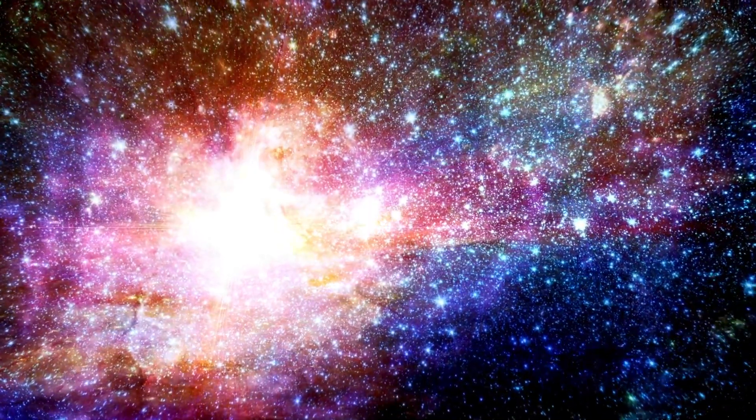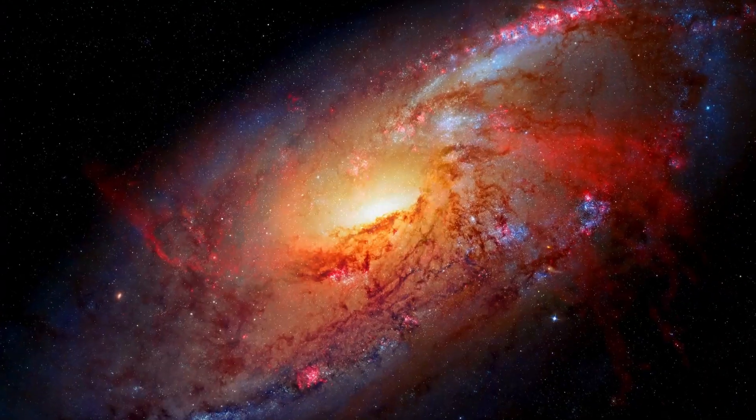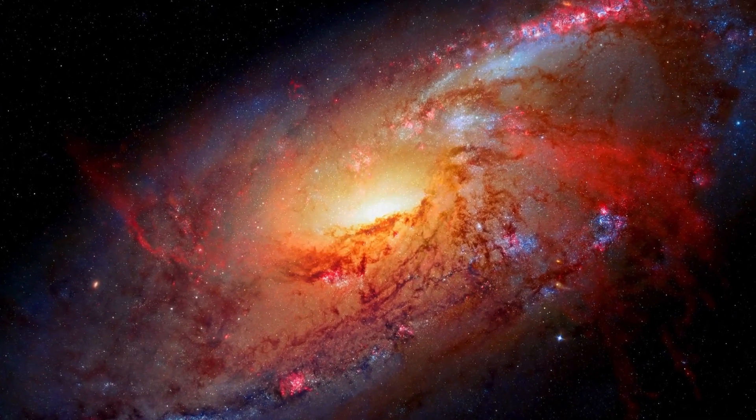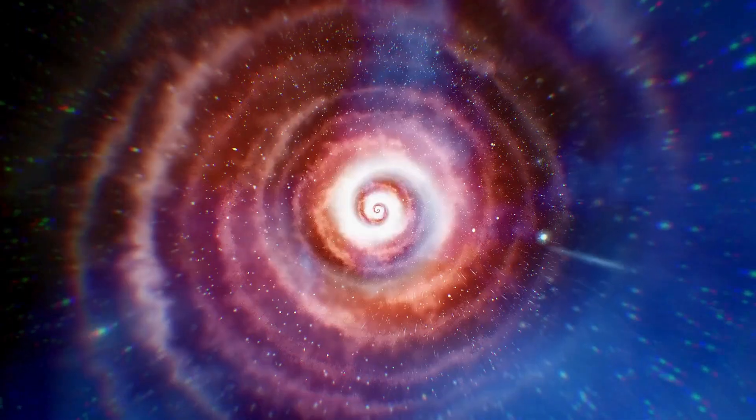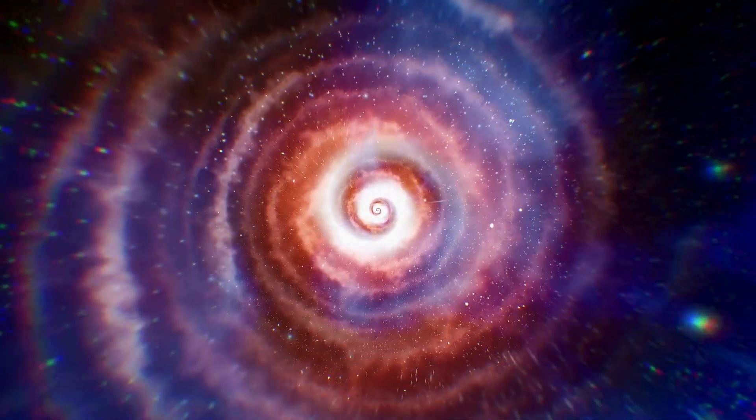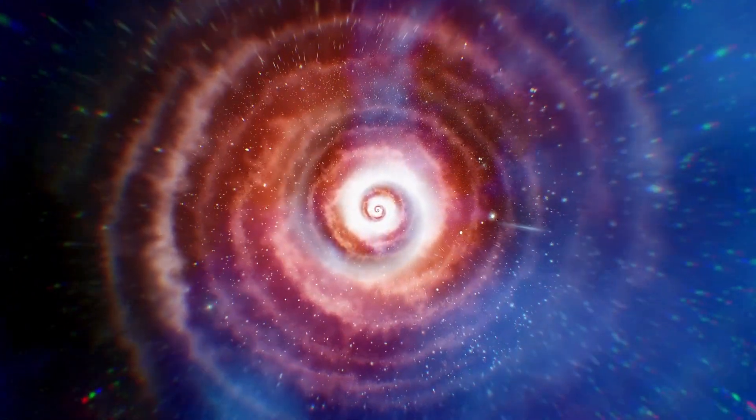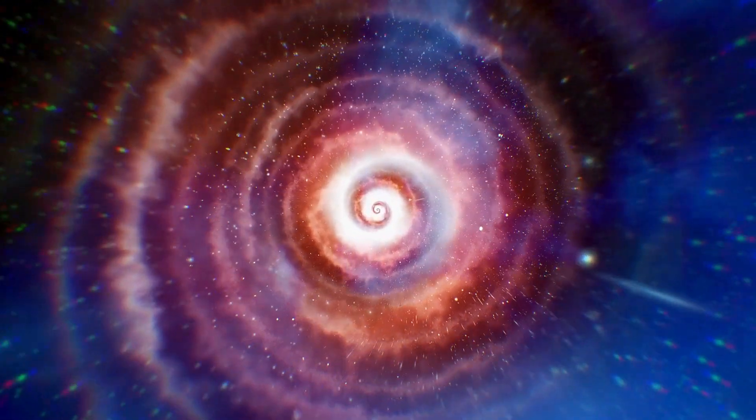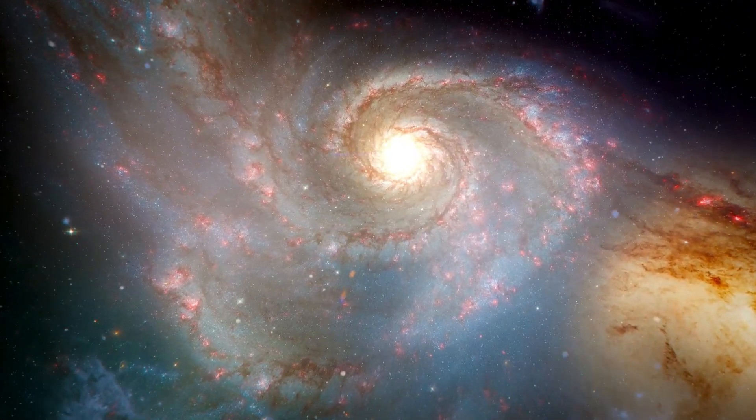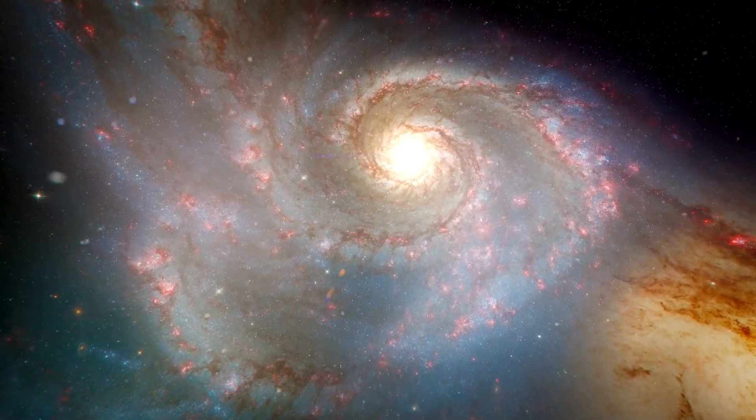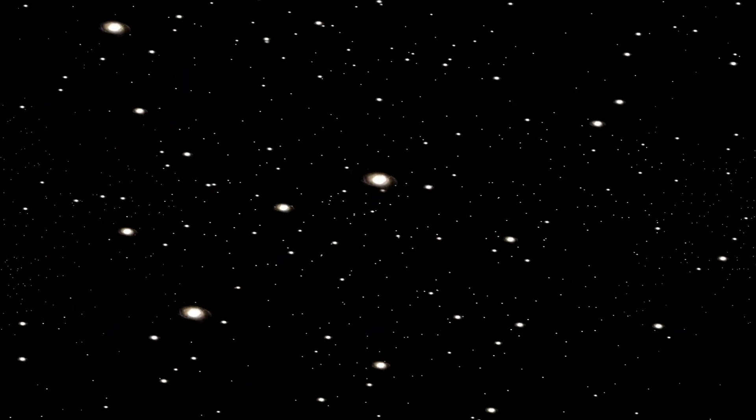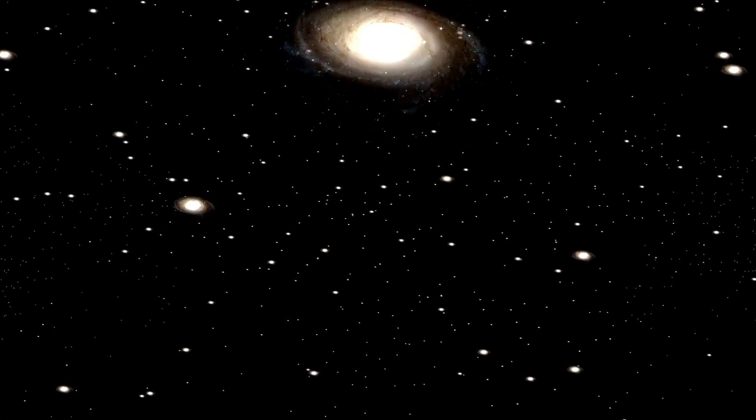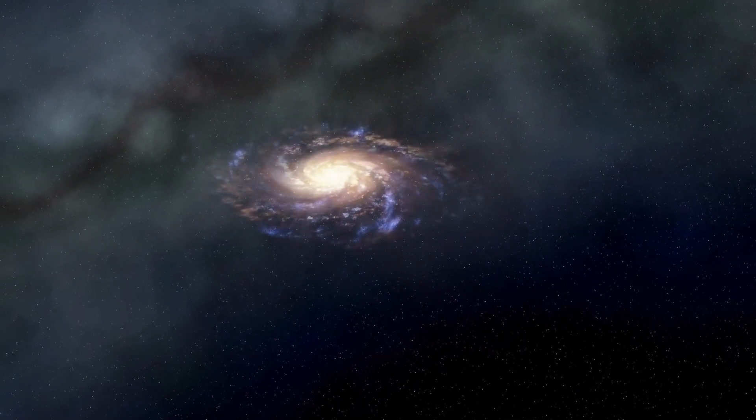Betelgeuse's proximity to Earth, at just 650 light-years away, makes it an even more compelling object of study. If Betelgeuse were to go supernova, the explosion would be visible from Earth even during the day and could shine as brightly as the full moon. This proximity allows astronomers to observe Betelgeuse in greater detail than many other stars, providing valuable data to refine our understanding of stellar life cycles. Despite the differing opinions, there is a consensus that Betelgeuse will eventually go supernova. When this happens, it will be an extraordinary event, offering insights into the life and death of massive stars.